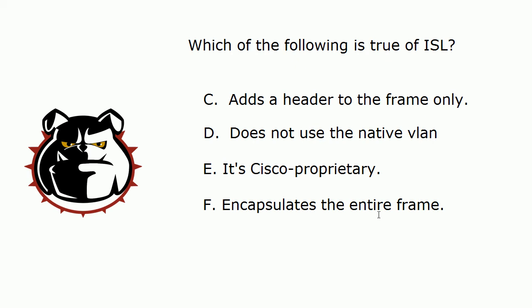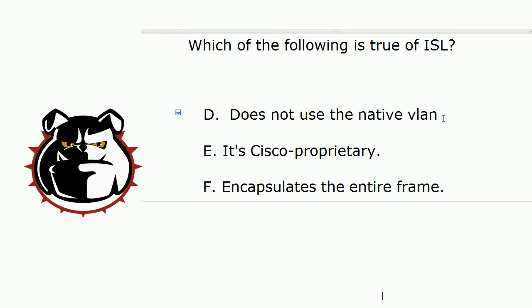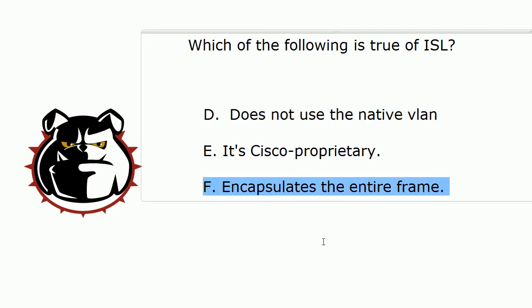ISL encapsulates the entire frame. The problem with ISL not using the native VLAN is that when frames are going to be trunked — sent from one switch to another — frames destined for the native VLAN don't have a header added; they're just sent across as-is. The receiving switch sees the untagged frames and knows they're destined for the native VLAN, which is VLAN 1. And not only that, ISL adds something to every single frame — it encapsulates the entire thing, where 802.1Q only puts a small header on it.